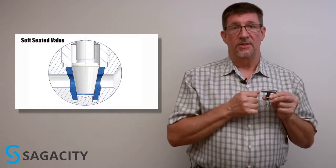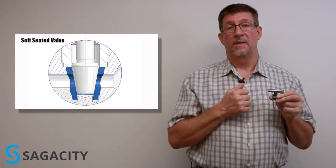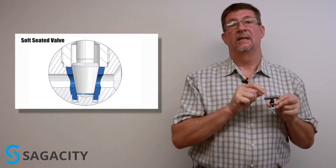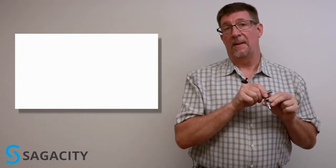For gas applications, you want a soft seat, like a Delrin plastic or a Teflon, so that the stem can actually sit and seal tight against the body of the valve.